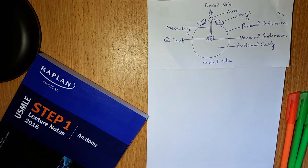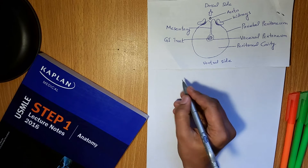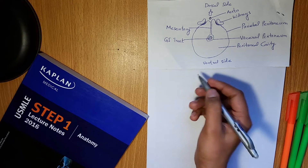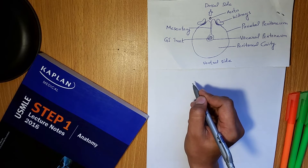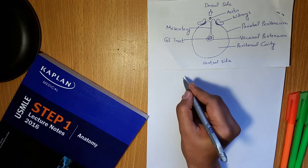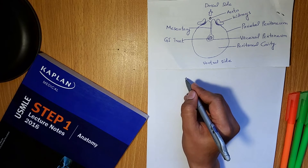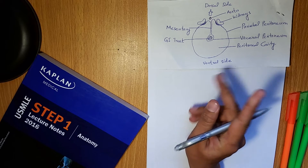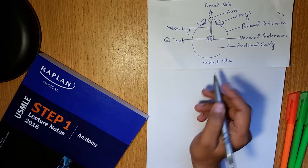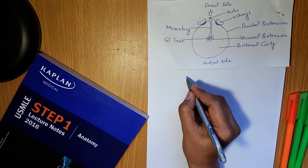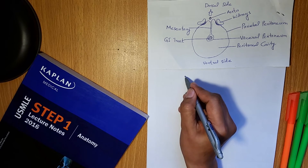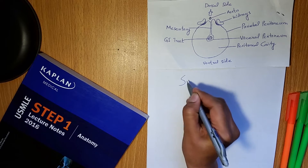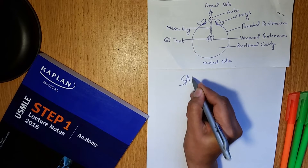Students often have difficulty remembering the names of retroperitoneal organs. So there is a mnemonic for the retroperitoneal organs. The mnemonic is SAD PUCKER.